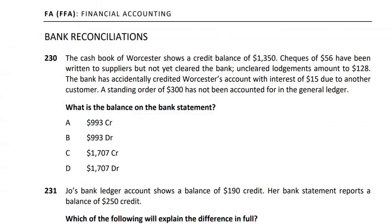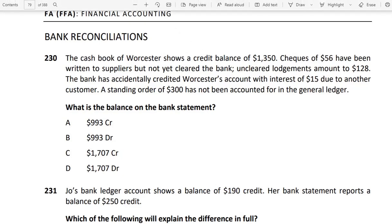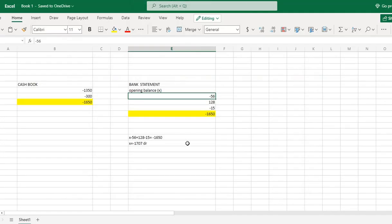The uncleared lodgement means that the customer has deposited money, which means our balance will increase. We have received a deposit but the bank has not yet credited our account. So the 128 uncleared lodgement is a bank item, and this will be added in the bank reconciliation.